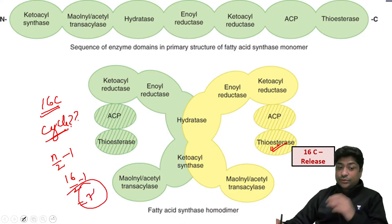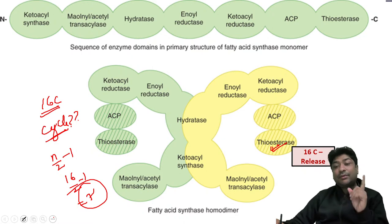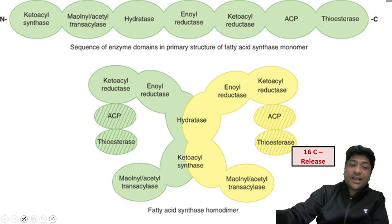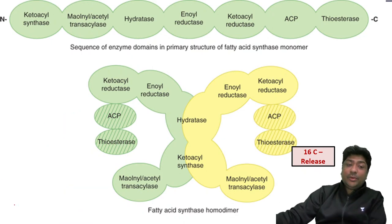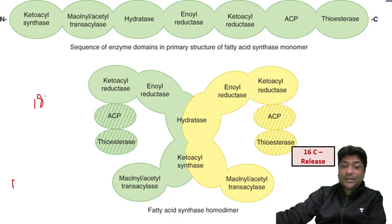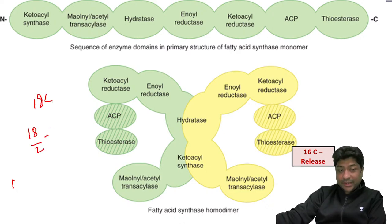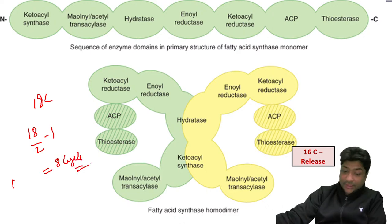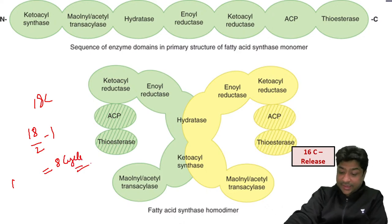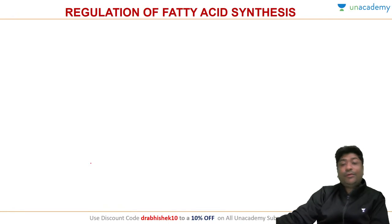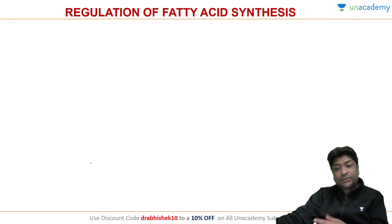A very frequent exam question: if a 16-carbon fatty acid is formed, how many cycles are required? The formula is n/2 − 1. So for 16 carbons: 16/2 − 1 = 7 cycles. For an 18-carbon fatty acid: 18/2 − 1 = 8 cycles.